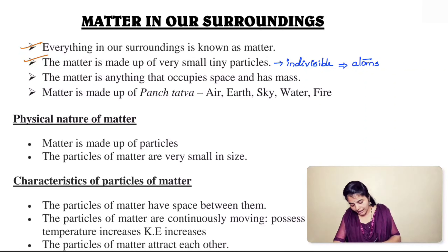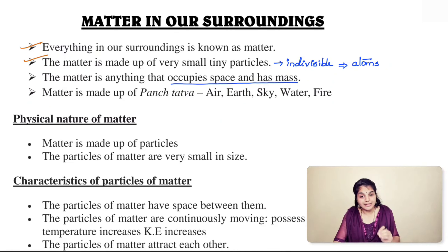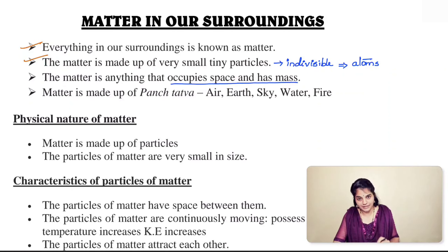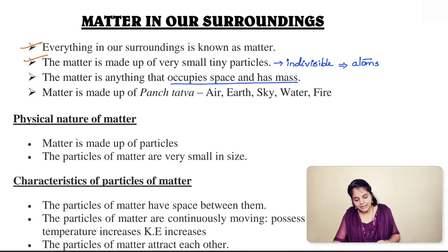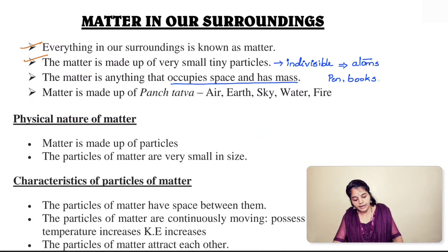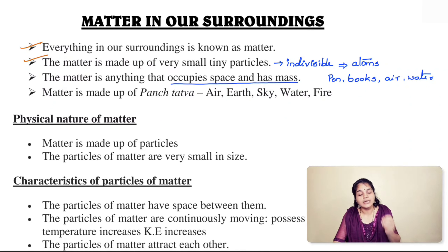What is matter? Matter is anything that occupies space and has mass — it has mass and it has volume. Examples of matter include pen, pencil, books, air, water, etc. All these are matter because they have mass and they occupy space.